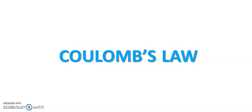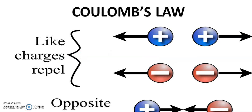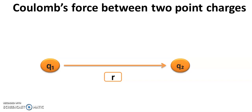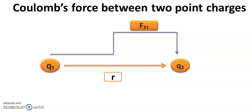Coulomb's law: in the year 1786, Coulomb deduced the expression for the force between two stationary point charges in vacuum or free space. Like charges repel each other and unlike charges — that is, opposite charges — always attract each other. Let us take two point charges Q1 and Q2. Q1 will exert a force on Q2, and the point charges Q1 and Q2 are separated by distance r. Q1 is exerting a force on Q2.